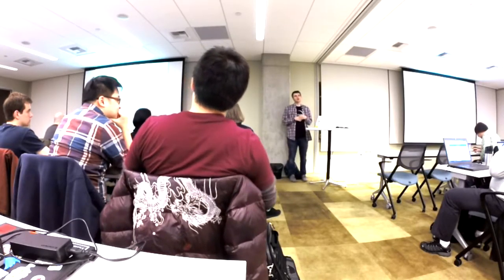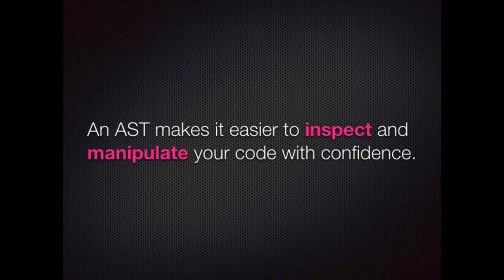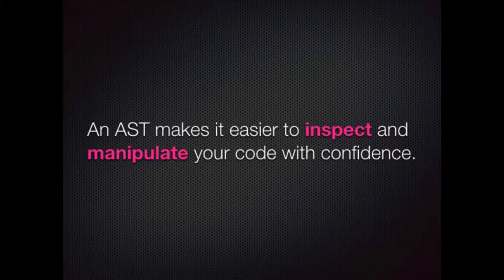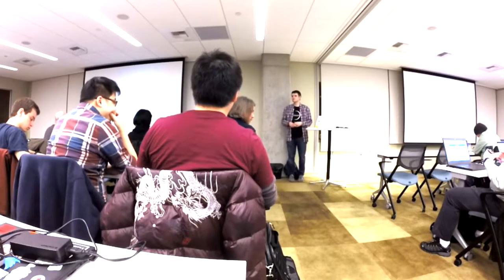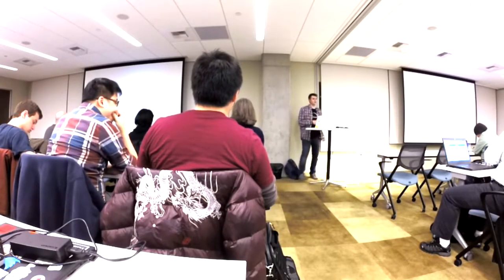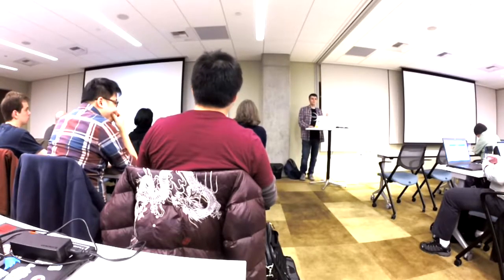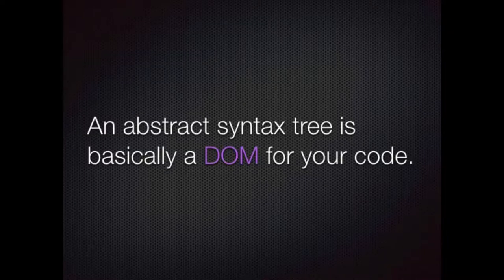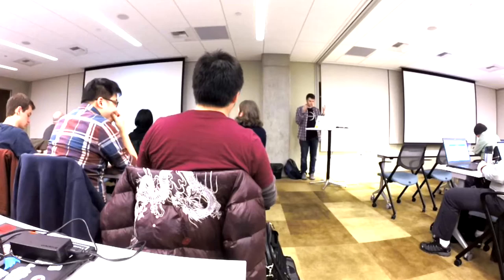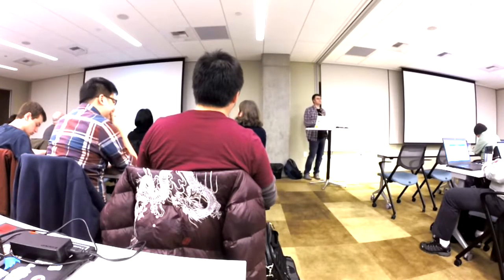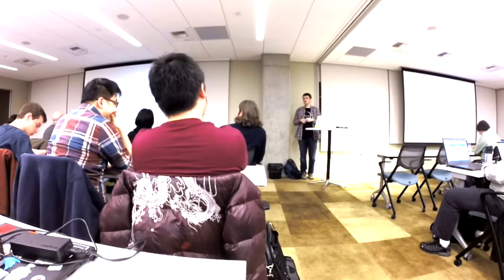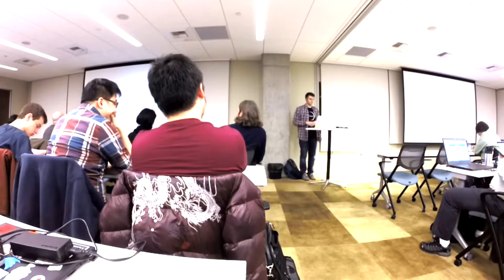Abstract syntax trees are this amazing tool that lets you inspect and manipulate your code with confidence. They're something that's not unique to JavaScript, but as JavaScript programmers discovered or remembered about this thing called ASTs, they started doing really powerful and amazing things. In a really simple sense, an AST is basically like a DOM for your code. It's not a perfect analogy, but you can imagine that you have your code and then convert it into some sort of data structure that you can do interesting things with. You can poke around at it, change it, manipulate it.